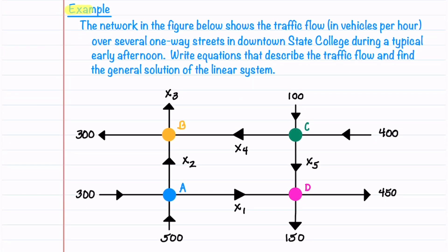Let's walk through this traffic flow example. The network in the figure below shows the traffic flow in vehicles per hour over several one-way streets in downtown State College — a town where Penn State is located — during a typical early afternoon. We're asked to write equations that describe the traffic flow and then find the general solution of the resulting linear system.